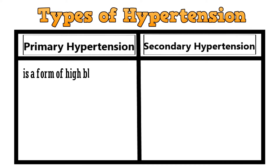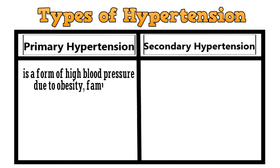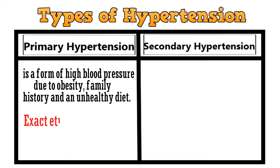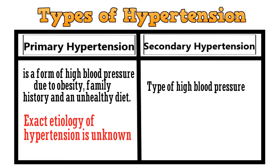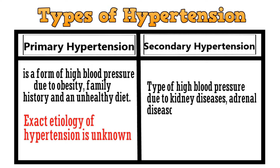Primary hypertension is a form of high blood pressure due to obesity, family history, and an unhealthy diet. The exact etiology of hypertension is unknown. Secondary hypertension is a type of high blood pressure due to other medical conditions like kidney diseases, adrenal disease, thyroid problems, and obstructive sleep apnea.